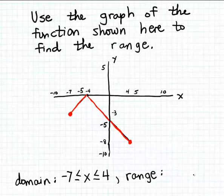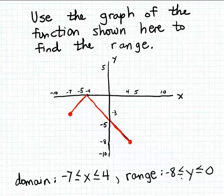Here's how we can write the range for this function: output values (y values) greater than or equal to minus 8 — that's the minimum output value — all the way up to 0, the maximum output value. So the range is numbers greater than or equal to minus 8 but at the same time less than or equal to 0.